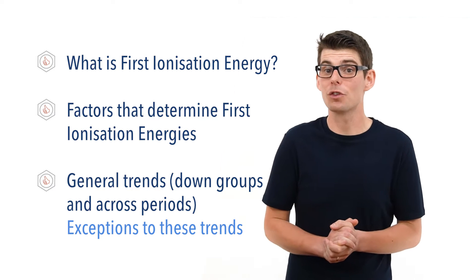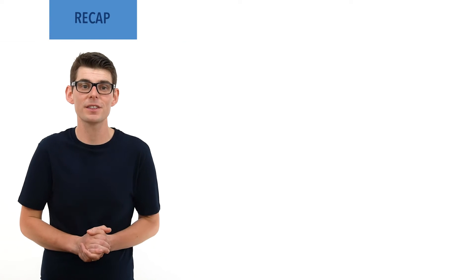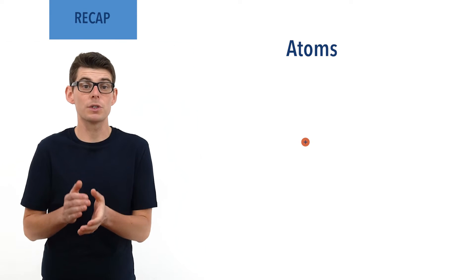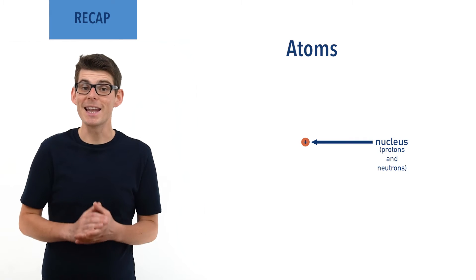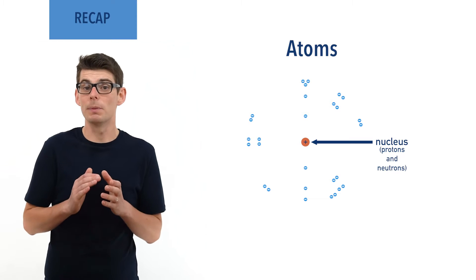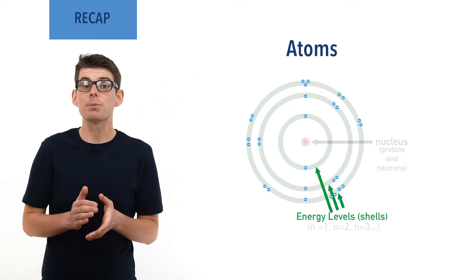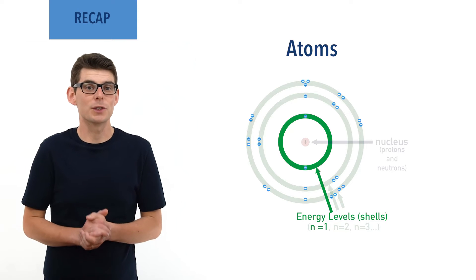Atomic orbitals and electron configurations have been covered in separate videos — check the links in the description below. Before we talk in detail about first ionization energy, there are a few essential ideas you need to be comfortable with. Inside an atom there is a very small dense region of positive charge, made up of protons and neutrons, called the nucleus. The nucleus is surrounded by negatively charged electrons that exist in atomic orbitals within specific energy levels or shells, labelled as principal quantum numbers, starting with the number 1 for the energy level closest to the nucleus.